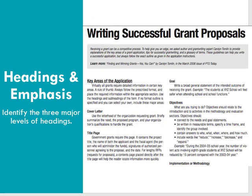Take a minute to pause the video and try to identify the major levels of headings. Hopefully you come up with a hierarchy something like this. First, the title 'Writing Grant Proposals' — largest, bold, title case. Second, the subtitle — smaller but still bold, title case, and underlined. Third, labels above the individual paragraphs — bold and title case. The 'Learn More' box in gray could be considered an inline heading — the fourth level — bold and italic, not set above the rest of the text but included in the same line with it.